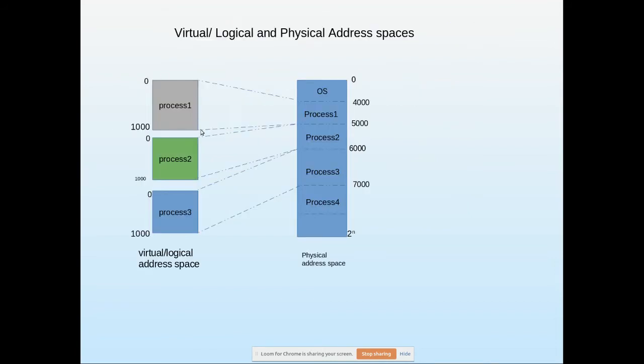Let's say these are three user processes. For explanation purposes I have taken this as 0 to 1000, 0 to 1000, and 0 to 1000, but actually it may be 512 or mostly 2 power n. The number of lines will be 2 power n lines.